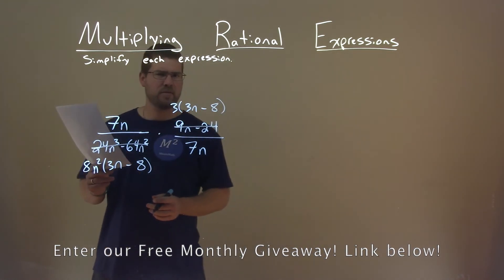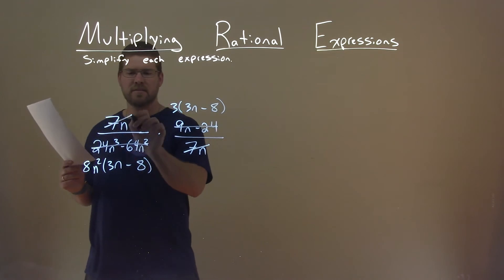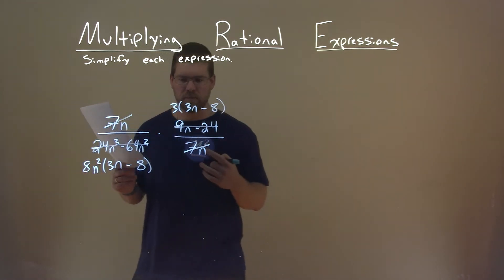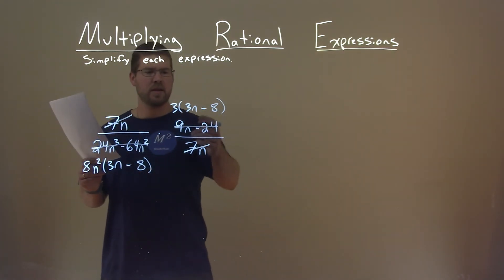And now I can cancel some things out. Notice the 7n here and the 7n there. They cancel. We have a 3n minus 8 and a 3n minus 8. They cancel as well.